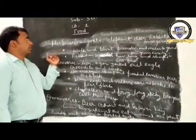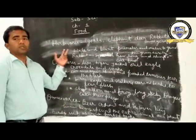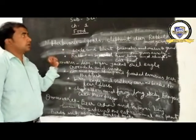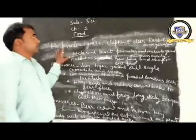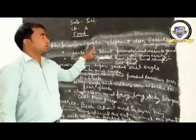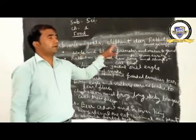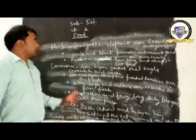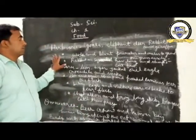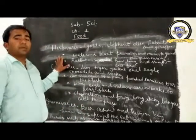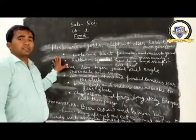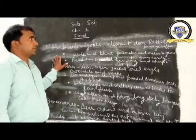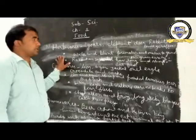The first point is herbivorous. To discuss in detail, herbivorous animals include goats, elephants, deer, rabbits, and giraffes. These animals eat their food according to their different types of teeth and species.